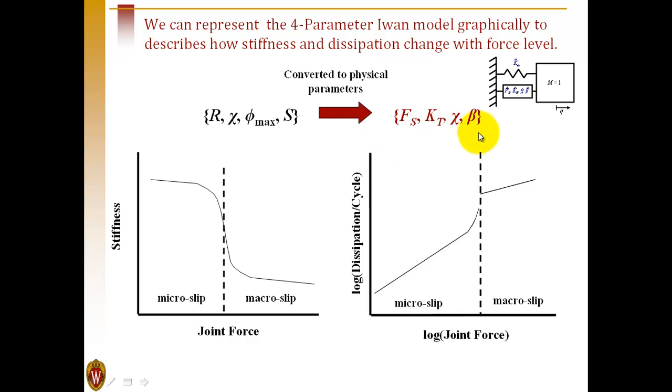Chi and beta govern the damping behavior. Chi is the slope of the power law, energy dissipation versus amplitude. And beta controls the transition from micro-slip to macro-slip and the level of micro-slip dissipation that we have in the system.